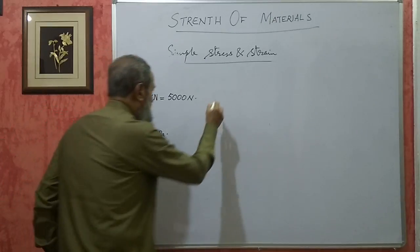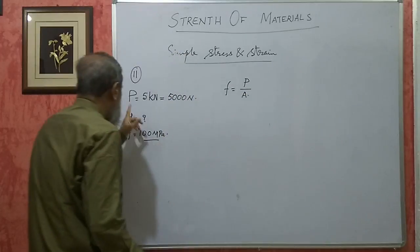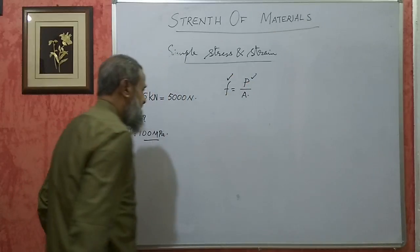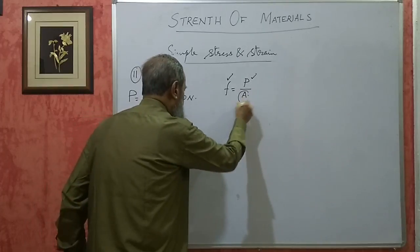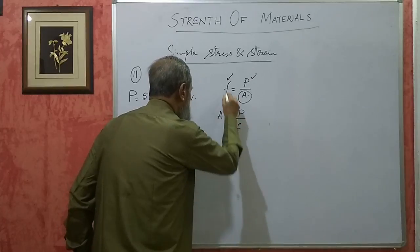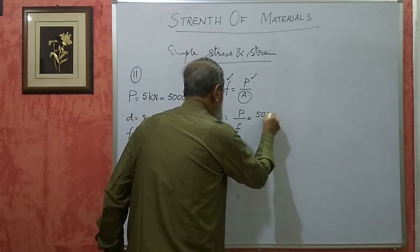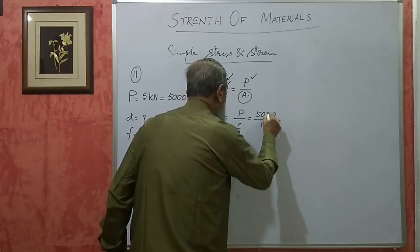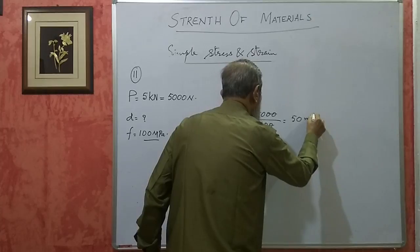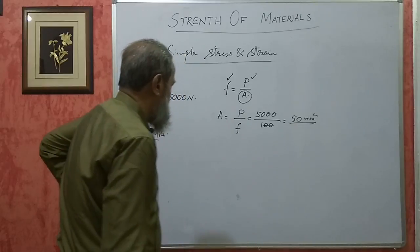You know stress equals load by area, P by A. We know the load and the allowable stress. So A = P / F = 5000 / 100 = 50 mm square. Because he has asked the diameter, the wire is circular in section. So area = π D² / 4.